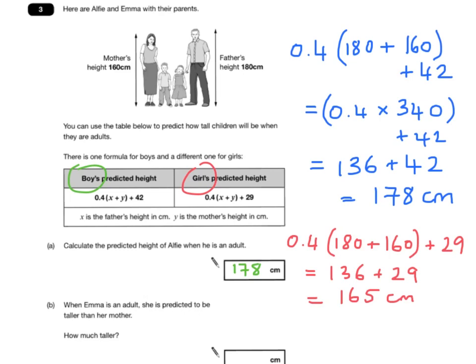That is not the answer, because it says, how much taller will she be? So, do remember to then compare that with her mum. Her mother is 160, so how much taller will Emma be? She'll be 165 minus 160, which is 5 centimetres taller.